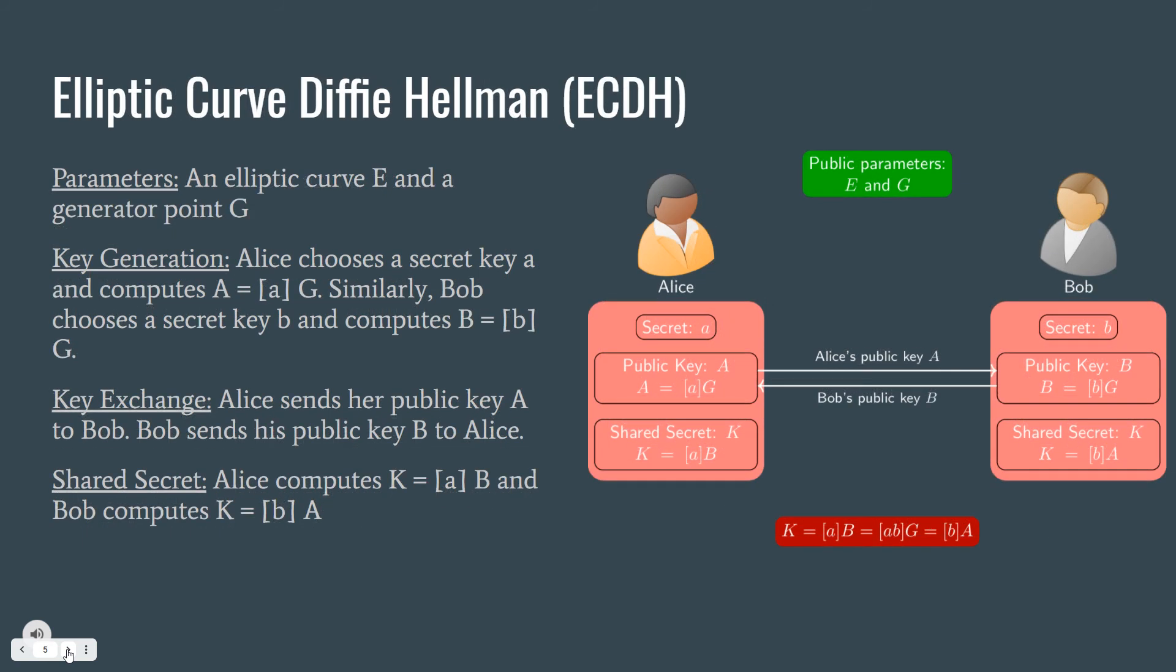In the elliptic curve variant, both parties are given an elliptic curve E and the generator point G on this curve. In key generation step, Alice chooses a secret key A and computes A times G, which is a scalar multiplication of a point. And similarly, Bob chooses a secret key B and computes B times G.